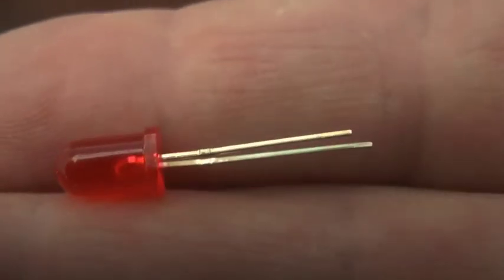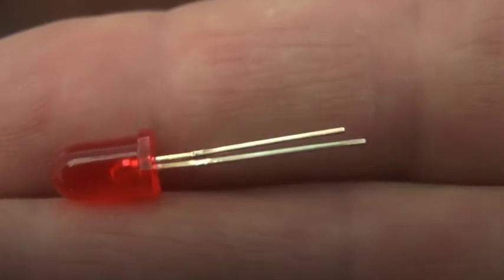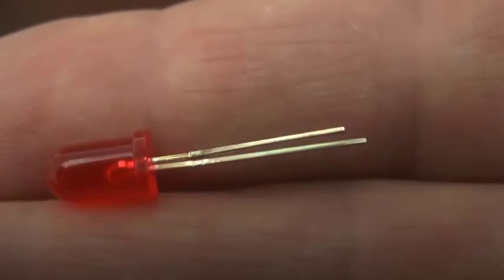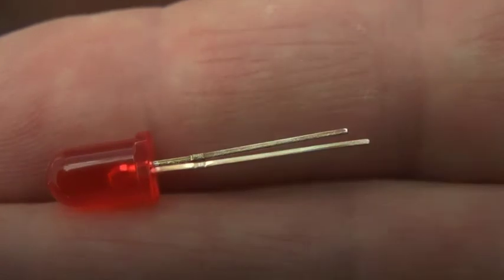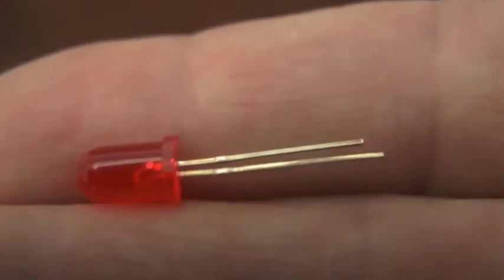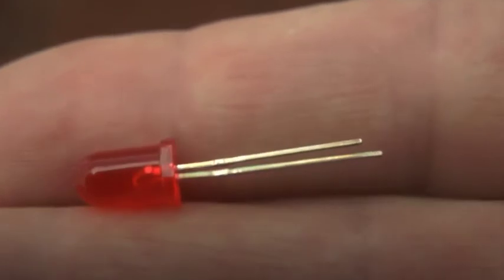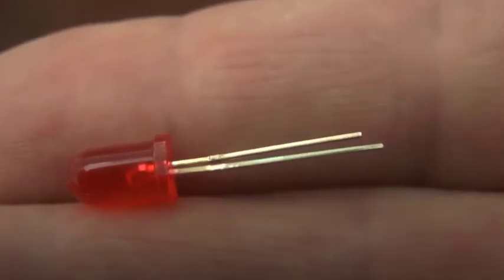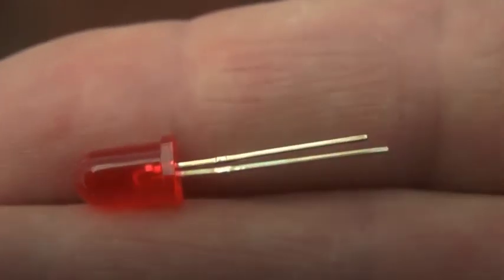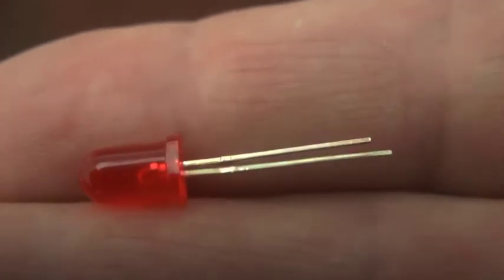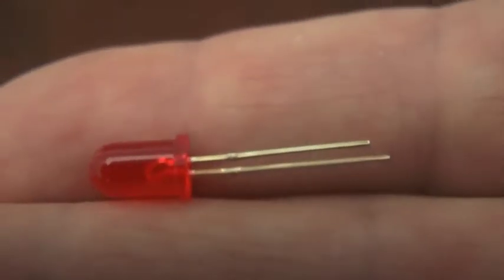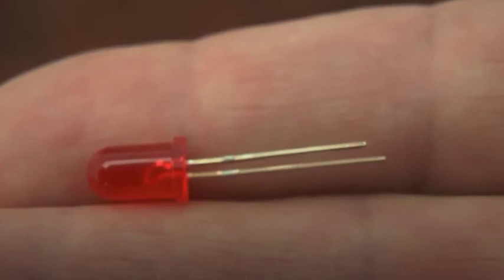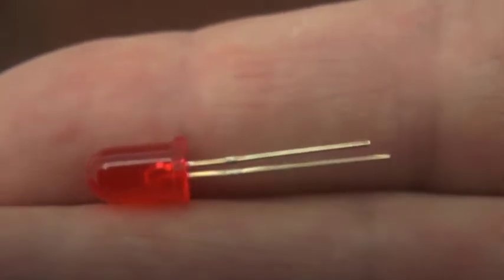Looking at the LED, you'll notice that one lead is shorter than the other. You'll also notice that there's a slight flat on the side of the LED there that you can just see reflecting the light as I tip it. The longest lead is essentially the lead that has to go on to the positive supply. So the short lead is negative and the flat marks the negative lead of an LED.